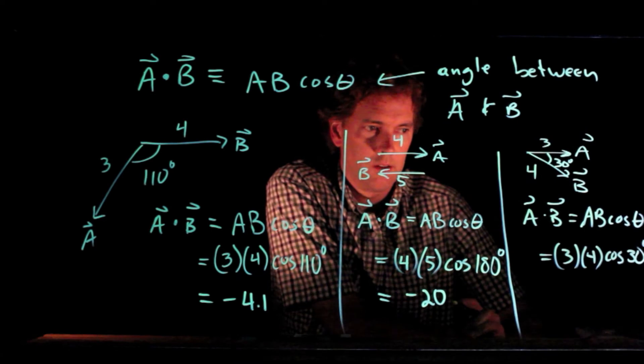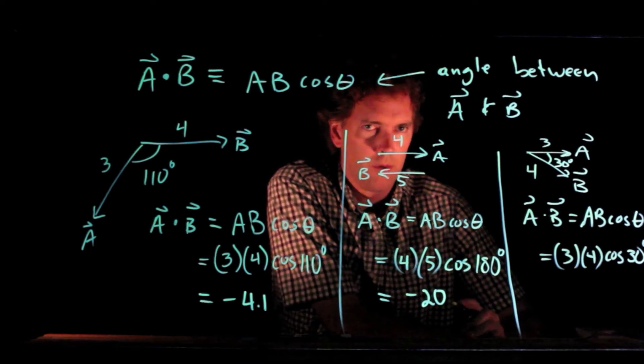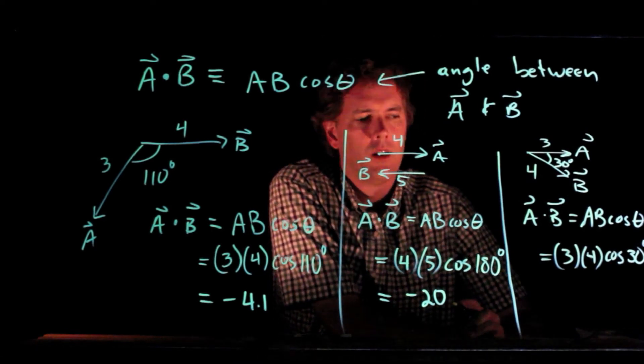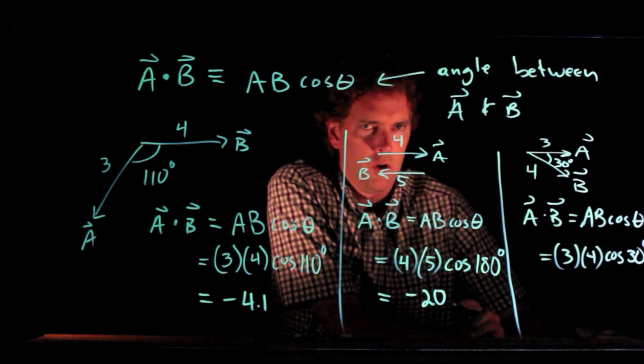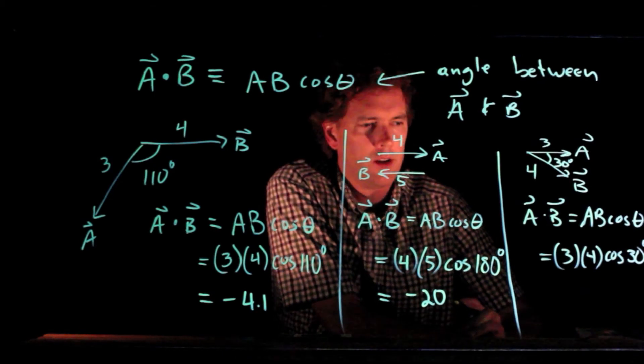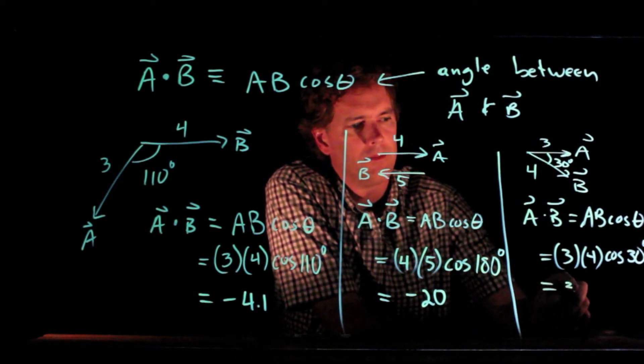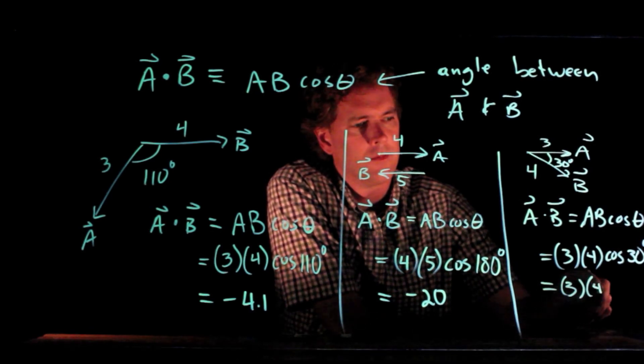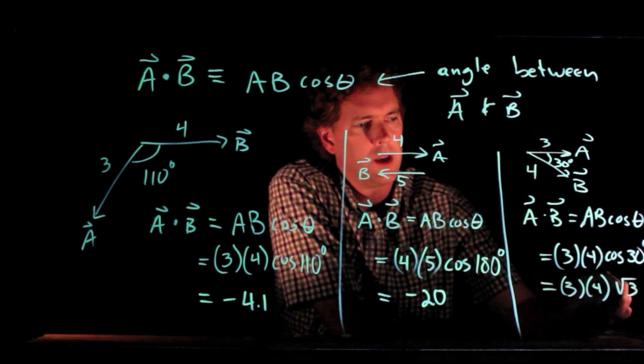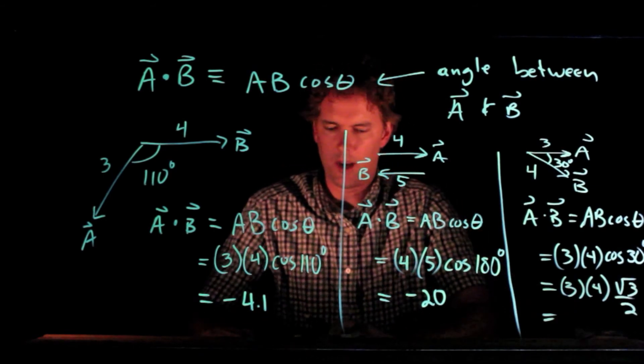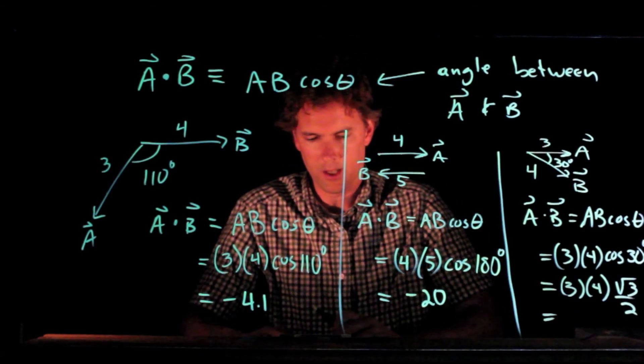And you might remember that a 30, 60, 90 triangle is a 1, square root of 3, 2 triangle. So cosine of 30 degrees is in fact square root of 3 over 2.